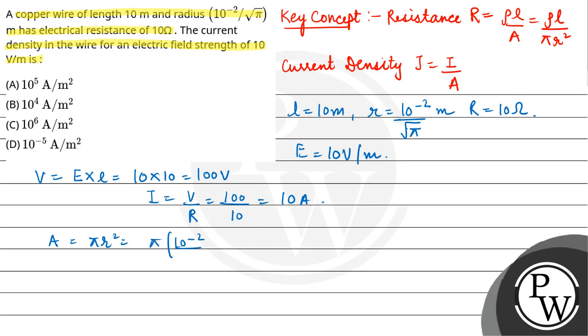Pi r square is 10 raised to the power minus 2 upon under root pi, the whole square. So this is equal to 10 raised to the power minus 4 meter square.